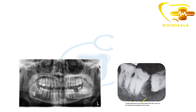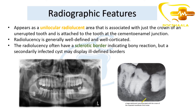Radiographically, it appears as a unilocular radiolucent area — a darker lesion — associated with just the crown of an unerupted tooth and attached to the tooth at the cementoenamel junction. The radiolucency is generally well-defined and well-corticated. As seen in this OPG, the radiolucency often has a sclerotic border indicating bony reaction, but a secondarily infected cyst may display ill-defined borders.